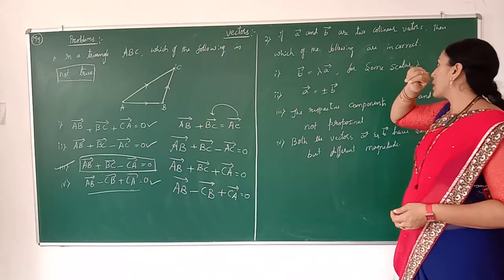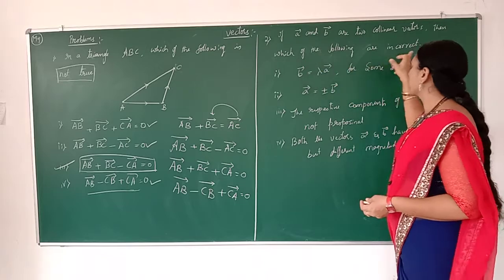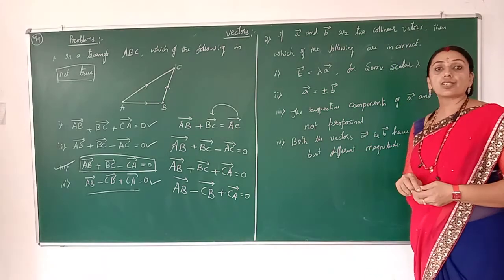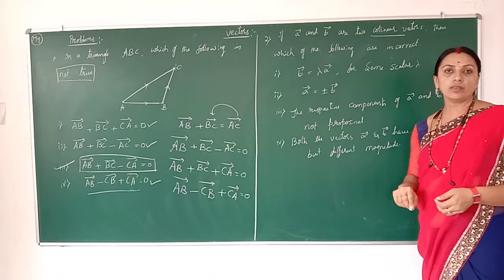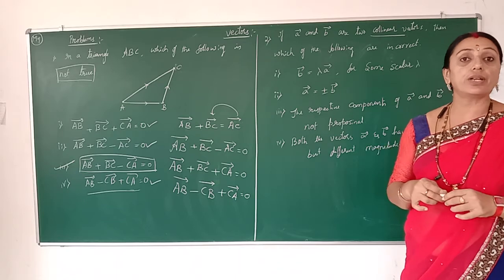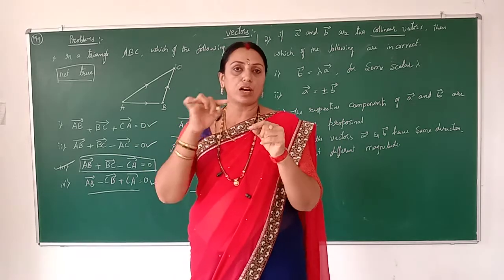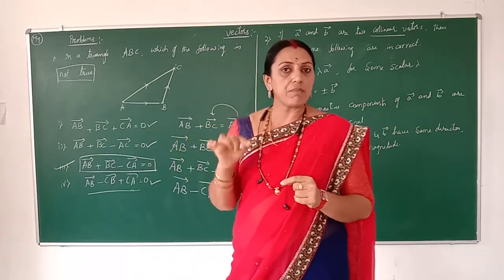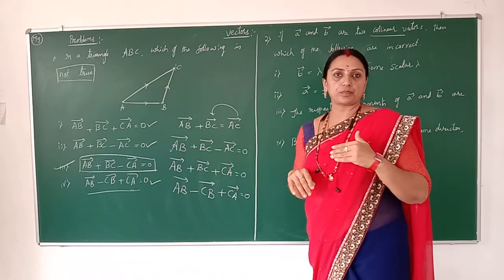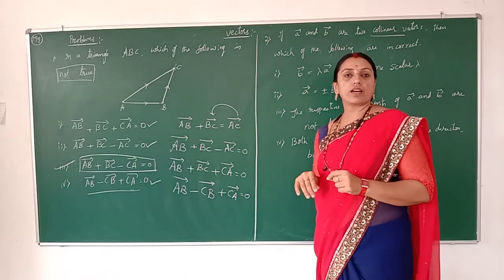Next: if vector A and vector B are two collinear vectors, which of the following are incorrect? We will verify which statements do not satisfy the conditions of collinear. The definition of collinear is: two or more vectors lying on the same line, or two or more vectors parallel to each other — both are called collinear.